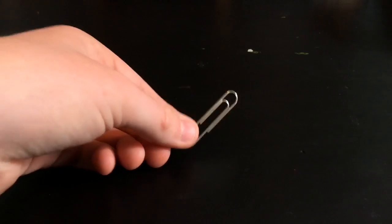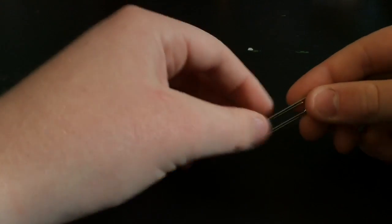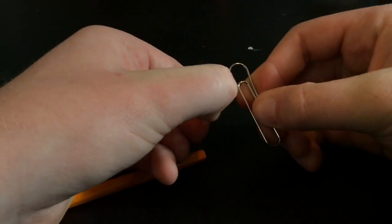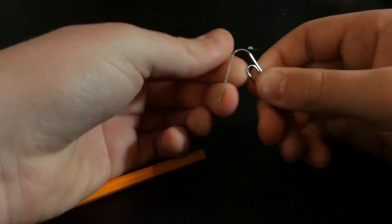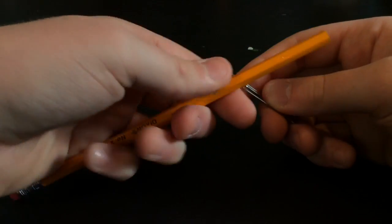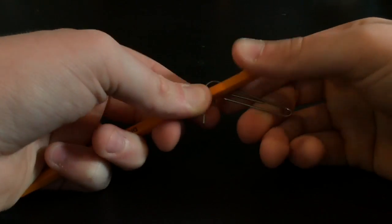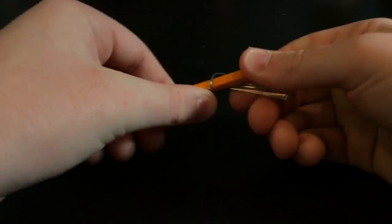Now we're going to go to the paperclip. Alright, for this you may want to use a pencil - it makes it easier. So undo the paperclip like so. I've got a nice big one, bigger is usually better, makes it easier.